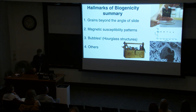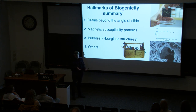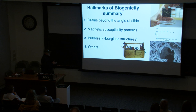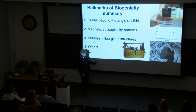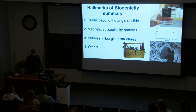To sum this part up: grains beyond the angle of slide help me look at a stromatolite and say that's evidence for life beyond the fact that it just looks like a stromatolite. Magnetic susceptibility allows us to do the same thing in fine-grained systems — it won't work in all systems, but in many carbonate-dominated systems it probably would. Structures like bubbles are things to look for that swing the interpretation one way or the other. These are just a few things in the toolkit we're building to help decide: are we looking at a sign of life or not?